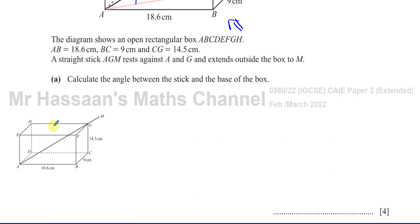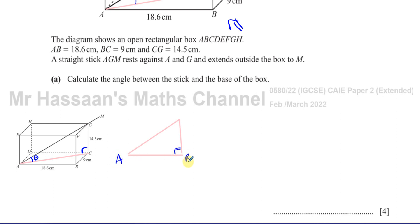Let me sketch that triangle. We have triangle ACG with the right angle at C. This is the angle theta we're trying to find. GC is 14.5 cm, and AC is unknown. To find theta, I need either AC or AG — so I need to find AC first.